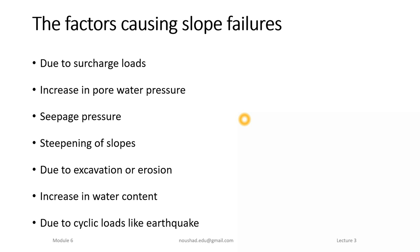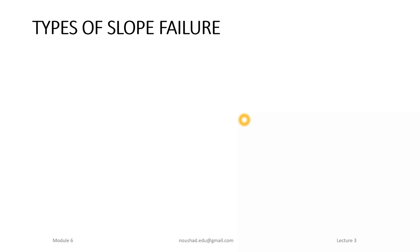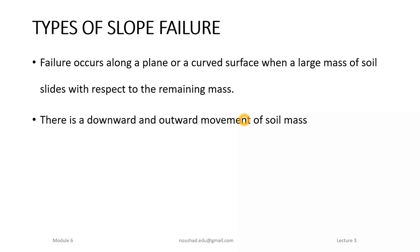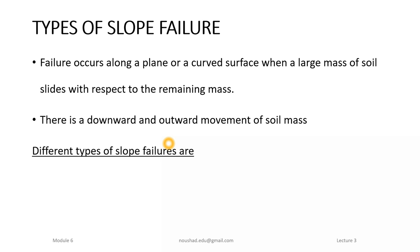Now we have to discuss the different types of slope failure. Failure actually occurs along a plane or curved surface. The slope failure is movement along such a surface, and the downward and outward movement of soil defines slope failure.